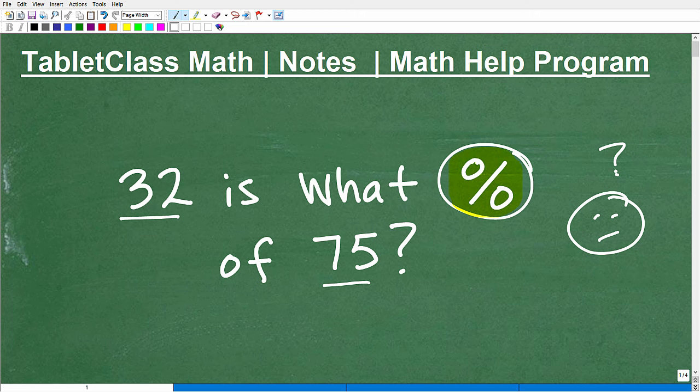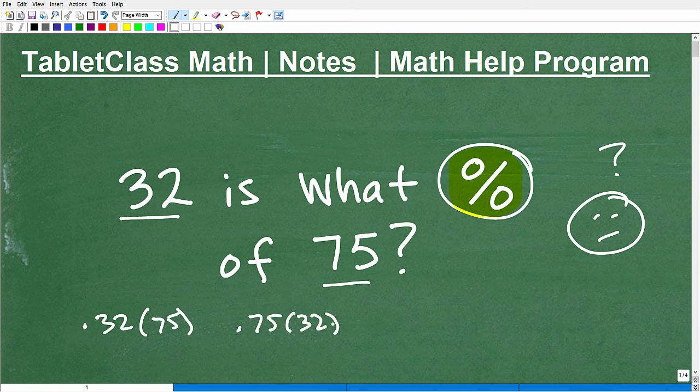I kind of remember this from like 20 years ago, how to do a problem like this. I think you'd take 0.32 and multiply it by 75. Or maybe 0.75 times 32. Or 32 divided by 75. You've got to do something with 32 and 75 in order to get the right answer. But what do we do?